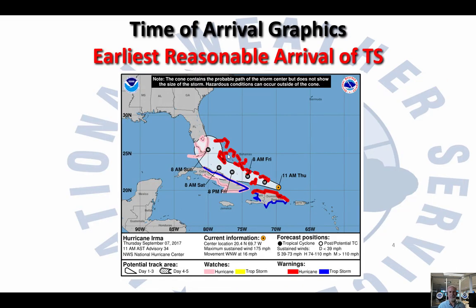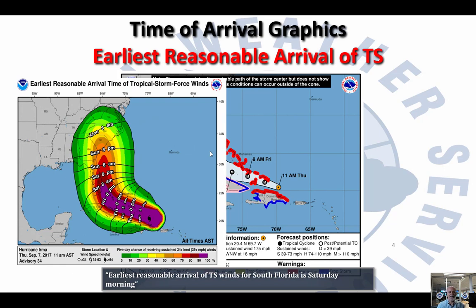The earliest reasonable arrival time — looking at this example here — shows that the center of the hurricane is forecast to make landfall somewhere along the southeast Florida coast at 8 a.m. on Sunday. Remember, this only addresses the center of the storm when it could make landfall. It's not taking into account the weather ahead of the storm and when that could start impacting the area. Now let's take a look at that same forecast and show the earliest reasonable arrival time. Based on this, the earliest reasonable arrival time is Saturday, 8 a.m. — so we're talking about a 24-hour difference.